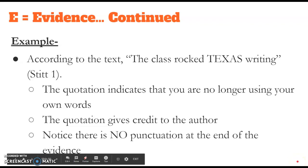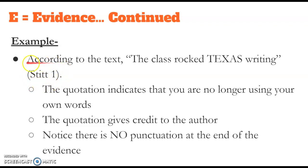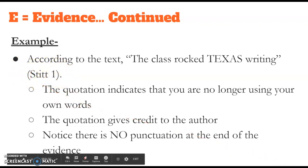Now let's look again at another example of good evidence citing. According to the text, there's my transition words that I'm using, and then here's my quote in parentheses. That way I'm giving credit to the author's words. The class rocked Texas writing. Stitt, number one. The quotation indicates that you are no longer using your words, but now you're using the author's words. And the quotation gives credit to the author, not you. This is not your words. This is the author's words. Notice that there's no punctuation at the end of the evidence. Okay, so when I say Stitt, one, I'm not putting a comma. I'm just citing whoever the author was and then quoting the page number. That is how you correctly cite evidence for your written response.